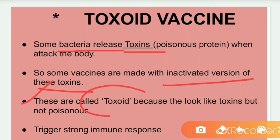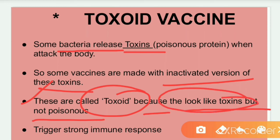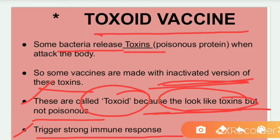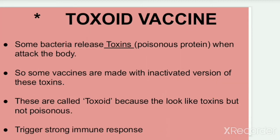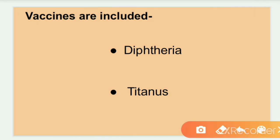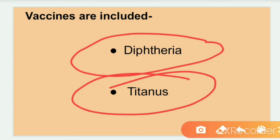These are called toxoids because they look like toxins but are not poisonous. They trigger a strong immune response in the body. Examples of toxoid vaccines are those for Diphtheria and Tetanus.